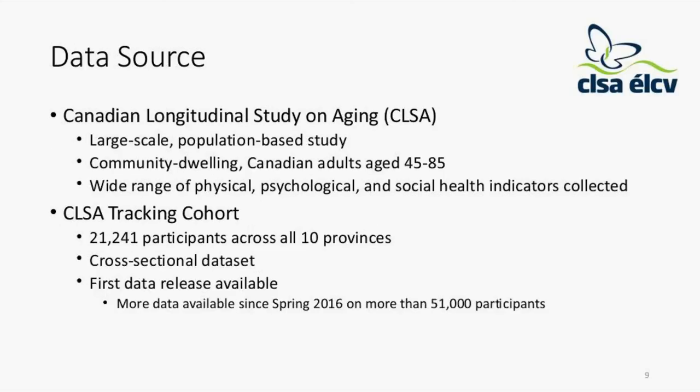The data source is the Canadian Longitudinal Study on Aging — a large-scale population-based study covering across Canada. It includes community-dwelling Canadian adults aged 45 to 85 at time of enrollment and collects a wide variety of physical, psychological, and social health indicators, making it a well-suited dataset for studying frailty. Participants had to be able to complete telephone interviews, which is important. The tracking cohort specifically was used because it was the first dataset available — it includes 21,241 participants and is cross-sectional.